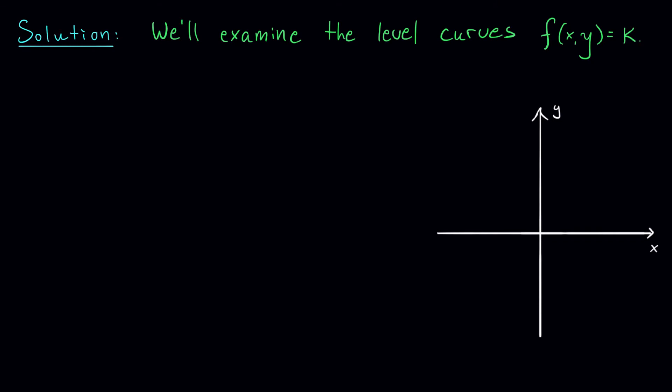Okay, so to start this problem off, we need to look at the level curves of our function by setting f(x,y) equal to k. Remember, f(x,y) here is 4x² + y² + 1, and we're setting that equal to k. What does this curve look like in the xy plane?